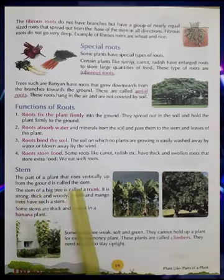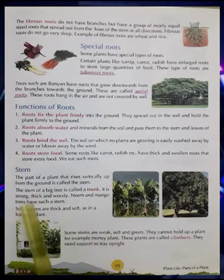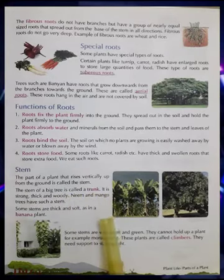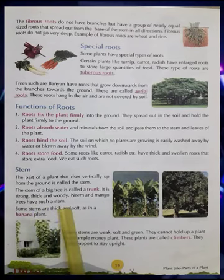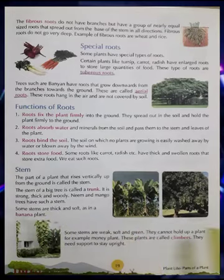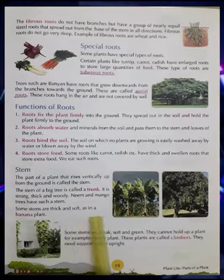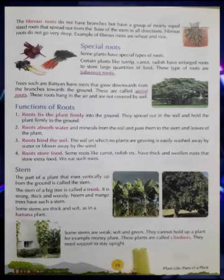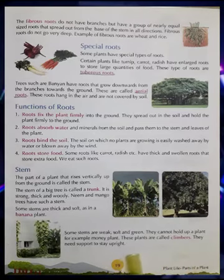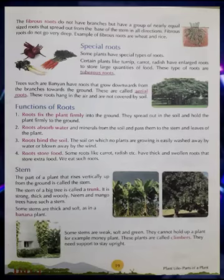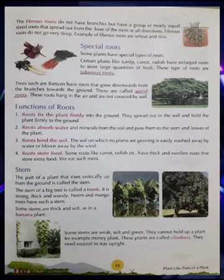Now, stem. The part of a plant that rises vertically up from the ground, from which other parts of a plant are attached, is called a stem. The stem of a big tree is called a trunk — it becomes thick. It is strong, thick, and woody. Neem and mango trees have such a stem. Some stems are thick and soft, as in the banana plant. Some stems are weak, soft, and green like climbers and creepers — they cannot hold up a plant on their own. For example, the money plant. These plants are called climbers or creepers; they need support to stay upright and they crawl on the land.